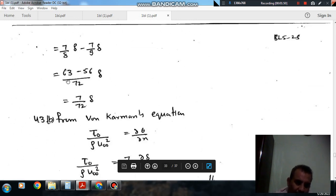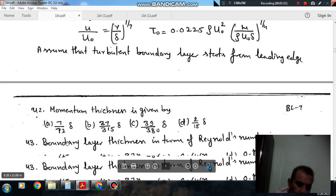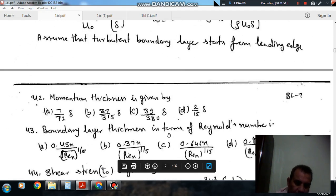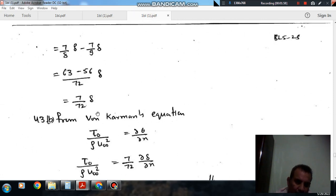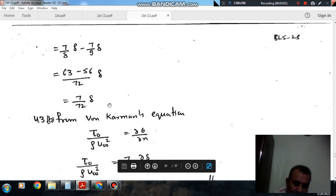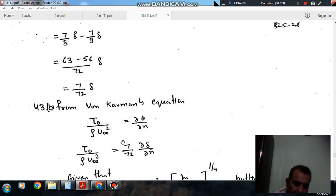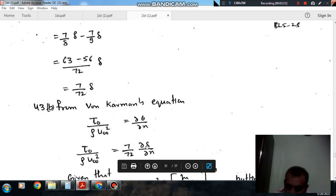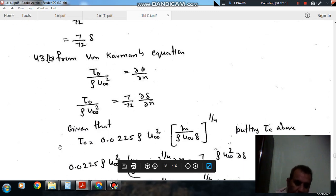Now the next question is boundary layer thickness in terms of Reynolds number. From the von Karman relation we have tau_0 by rho u_infinity squared equals d(delta)/dx. Converting theta into delta, it will be 7 by 72 d(delta)/dx. And tau_0 is given as 0.0225 rho u_infinity squared times (mu/rho u_infinity delta)^(1/4).